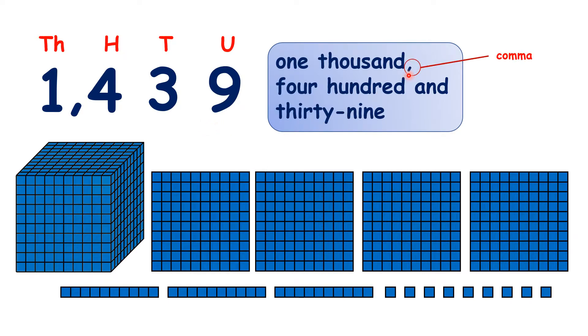Notice that there's a comma between the thousands and the hundreds, both when the number's written in digits and in words. Though in some maths textbooks, they don't always include the comma when a number's written in words.